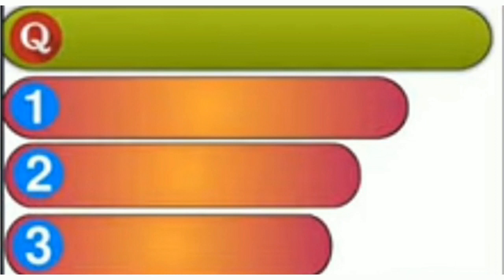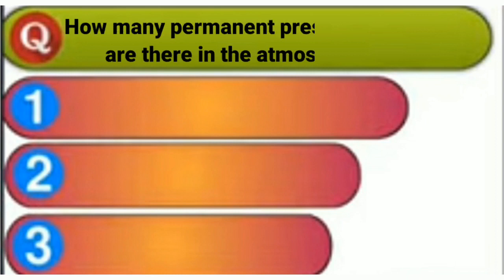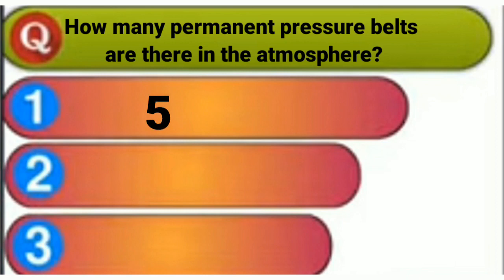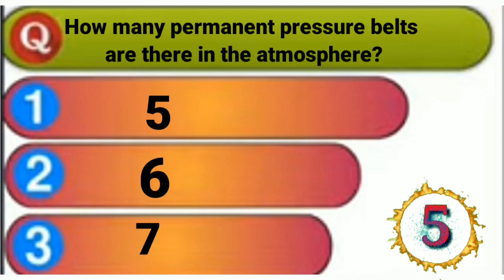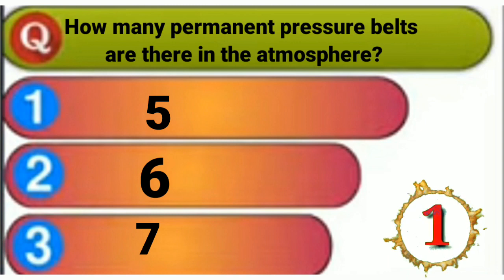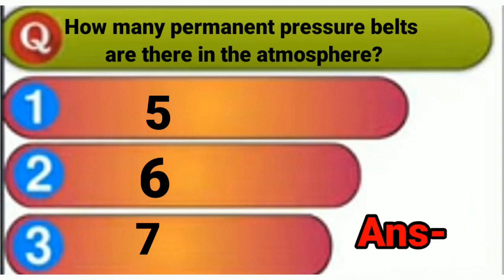Now the next question is: how many permanent pressure belts are there in the atmosphere? The correct answer is option three — seven permanent pressure belts.